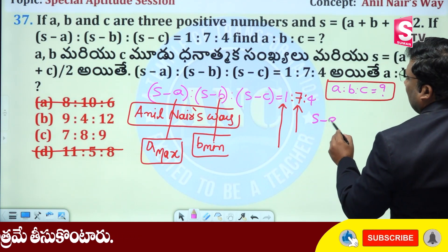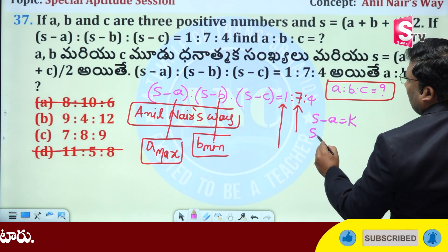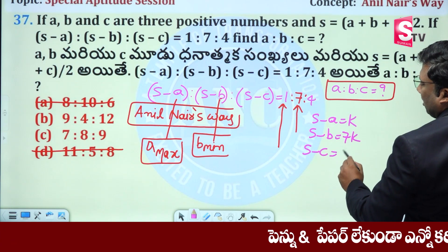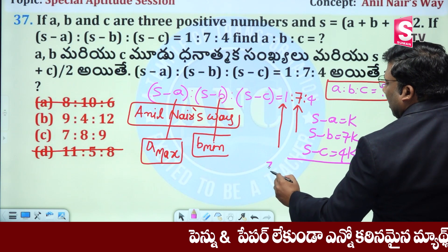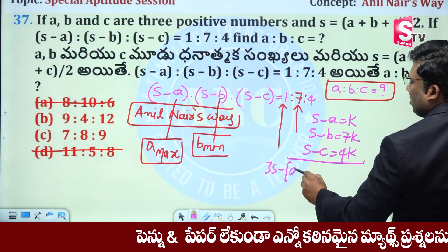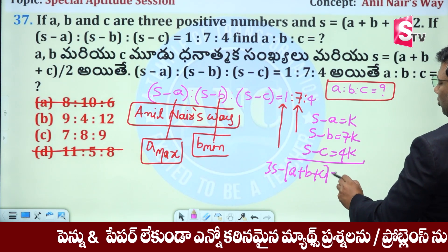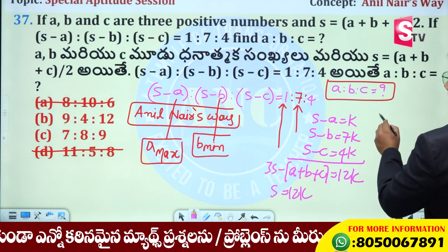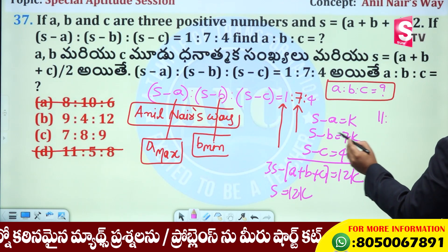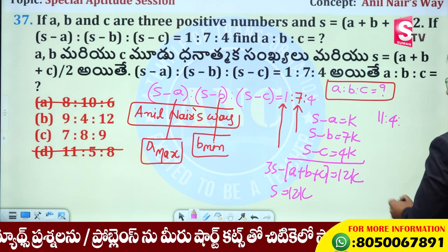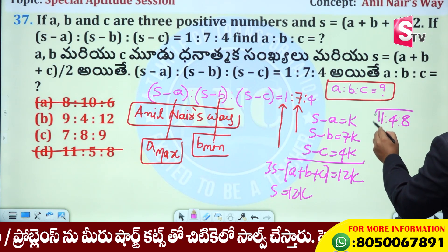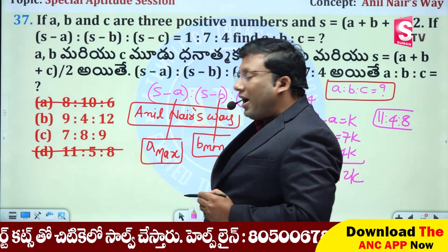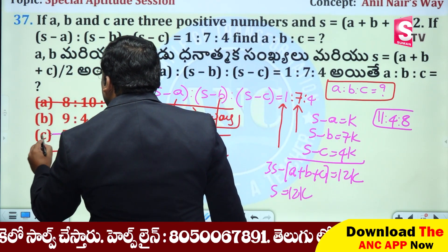Traditional method: S-A is 1K, S-B is 7K, S-C is 4K. Adding them: 3S minus (A + B + C) equals 12K. So A + B + C equals 12K. Therefore A is 11K, B is 4K — wait — A is 4, C is 8. So the ratio A : B : C is 11 : 4 : 8. A is maximum.